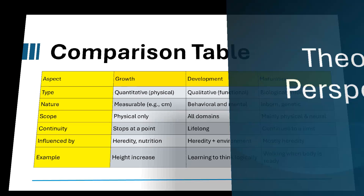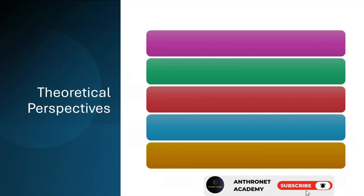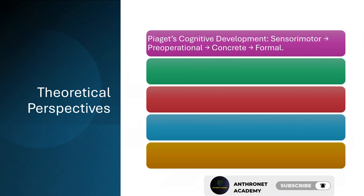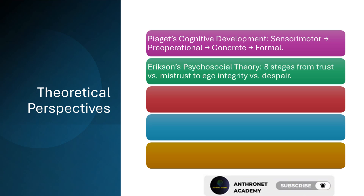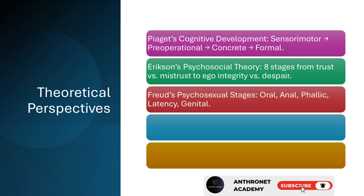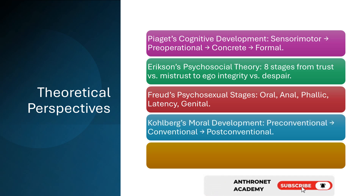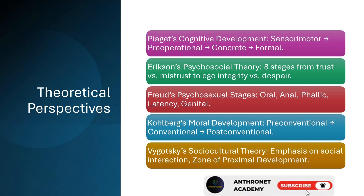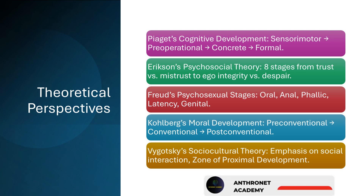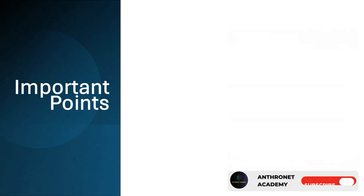Theoretical perspectives briefly for exams: Piaget's cognitive development — sensorimotor, preoperational, concrete, formal; Erikson's psychosocial theory — eight stages from trust vs. mistrust to ego integrity vs. despair; Freud's psychosexual stages — oral, anal, phallic, latency, genital; Kohlberg's moral development — pre-conventional, conventional, post-conventional; Vygotsky's sociocultural theory — emphasis on social interaction and zone of proximal development.